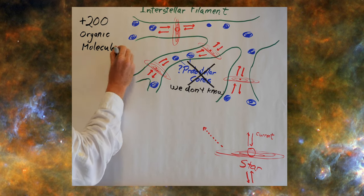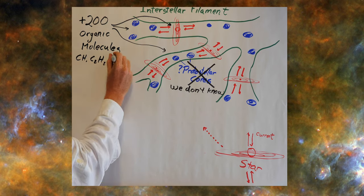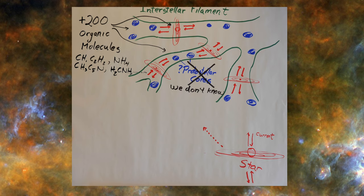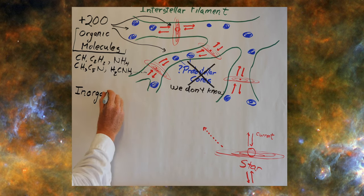We have found, to date, over 200 organic molecules in the interstellar medium. I'm sure that number will continue to grow exponentially as we study more and more. One of the big questions, of course, is where do they come from? How do they form? How do they get there?